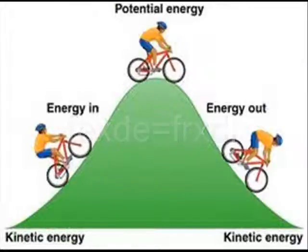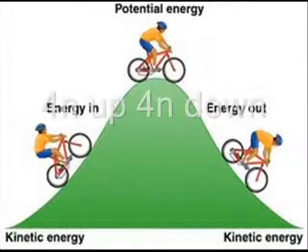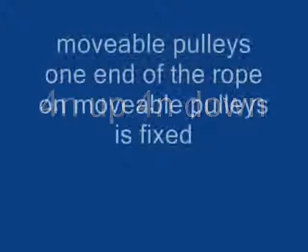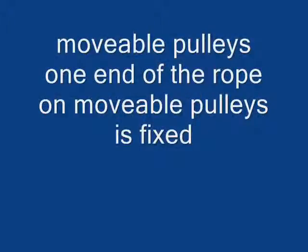The work equation is F-E times D-E equals F-R times D-R. For example, with N equals 4, the system is equally balanced on a machine.